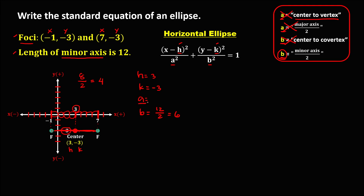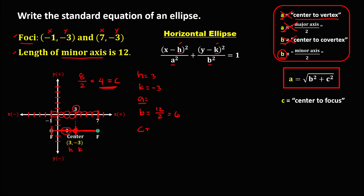To solve for a, we use the formula a = √(b² + c²). But first, we need to solve for c, which is the distance from center to focus. From center to focus, c = 4. Now solving for a: a = √(b² + c²) = √(6² + 4²) = √(36 + 16) = √52.